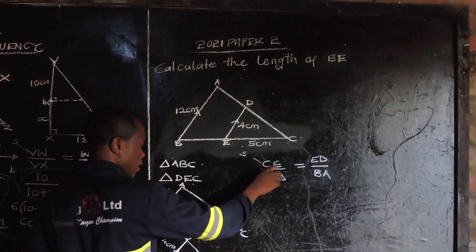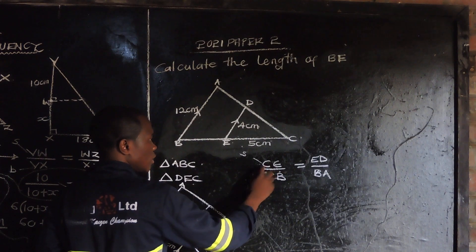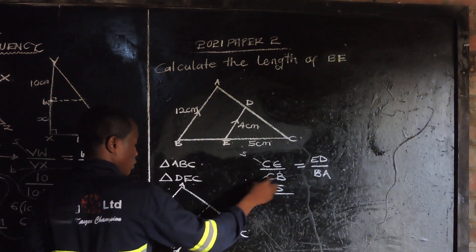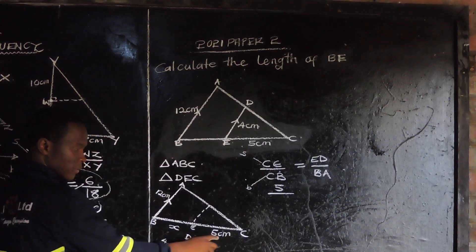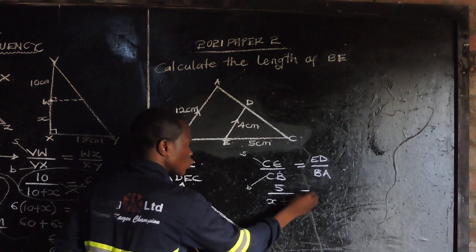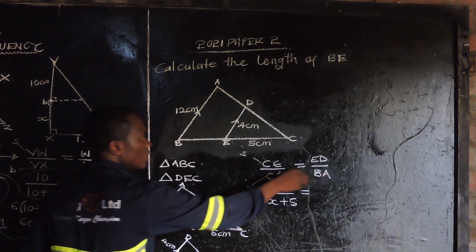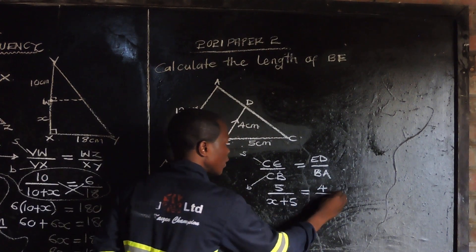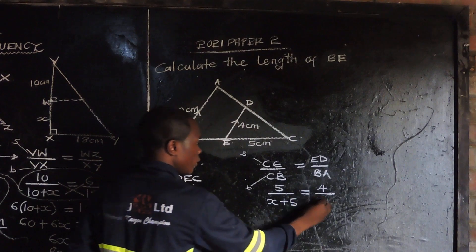So CE is 5. We're going to write five over CB, which is X plus five. This is equal to ED over BA. ED is 4, and BA is 12.